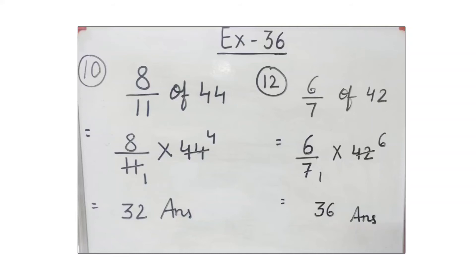Yes, by table of 7: 7 ones are 7, 7 sixes are 42. Now we have 6 and 6 as numerators. Multiply these numerators: 6 times 6 is 36. 36 is the answer.